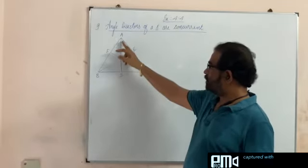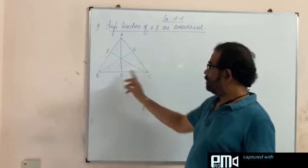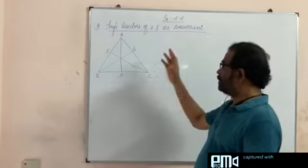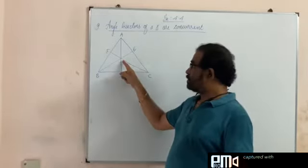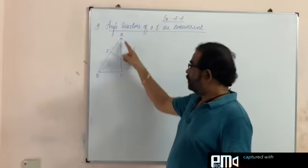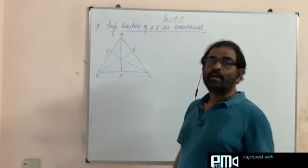AD is the angle bisector of angle A, BE is the bisector of angle B, CF is the angle bisector of angle C. Two or three lines passing through the same point are called concurrent lines. We have to prove that all these angle bisectors are concurrent, that is passing through the same point.